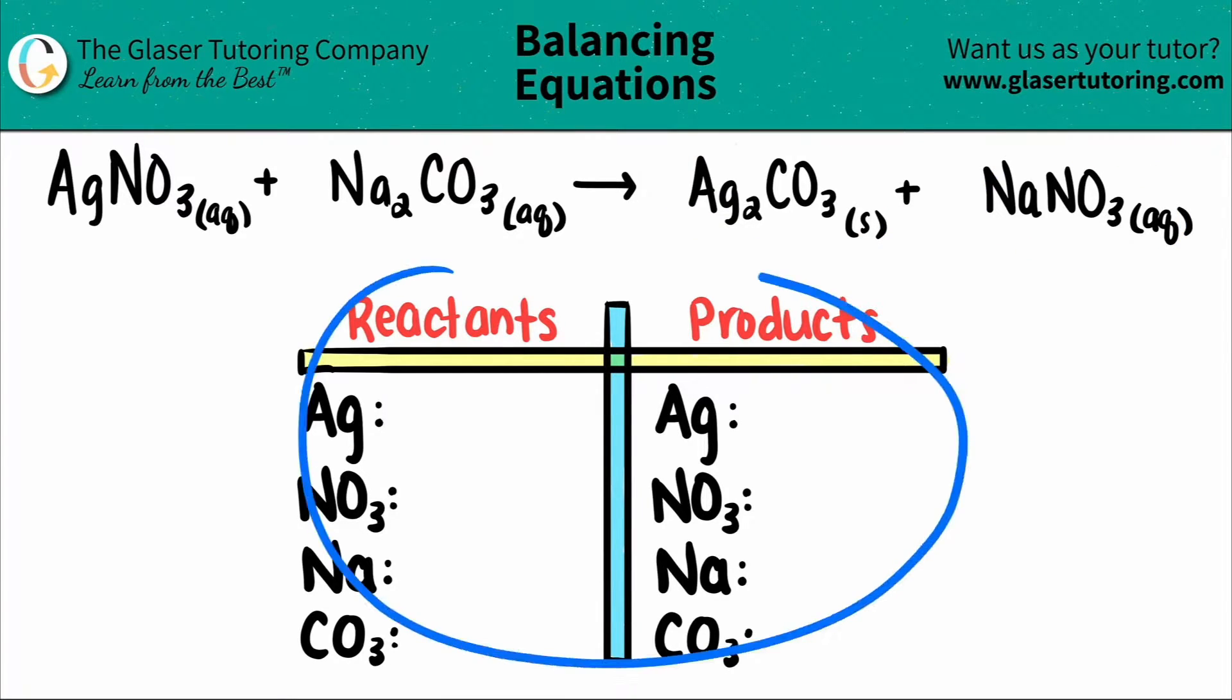So I wrote down our chart and all of the elements or the polyatomics that I see on both the left and the right side. Remember, the polyatomic NO3 is nitrate and the polyatomic CO3 is carbonate. Now, all we have to do is just write down how many we have of each.